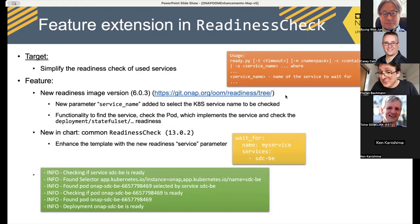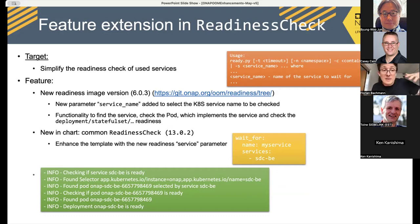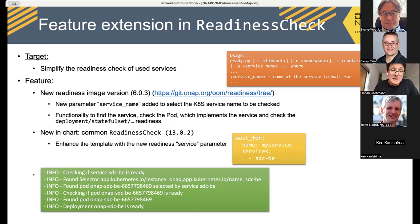The readiness check was an early part of the OOM common functionality — a useful tool that we had to improve. It had the biggest version jump and the new readiness check has image version 6.0.3 and Helm chart version 13.0.2. I'll tell you the story behind why it was important.